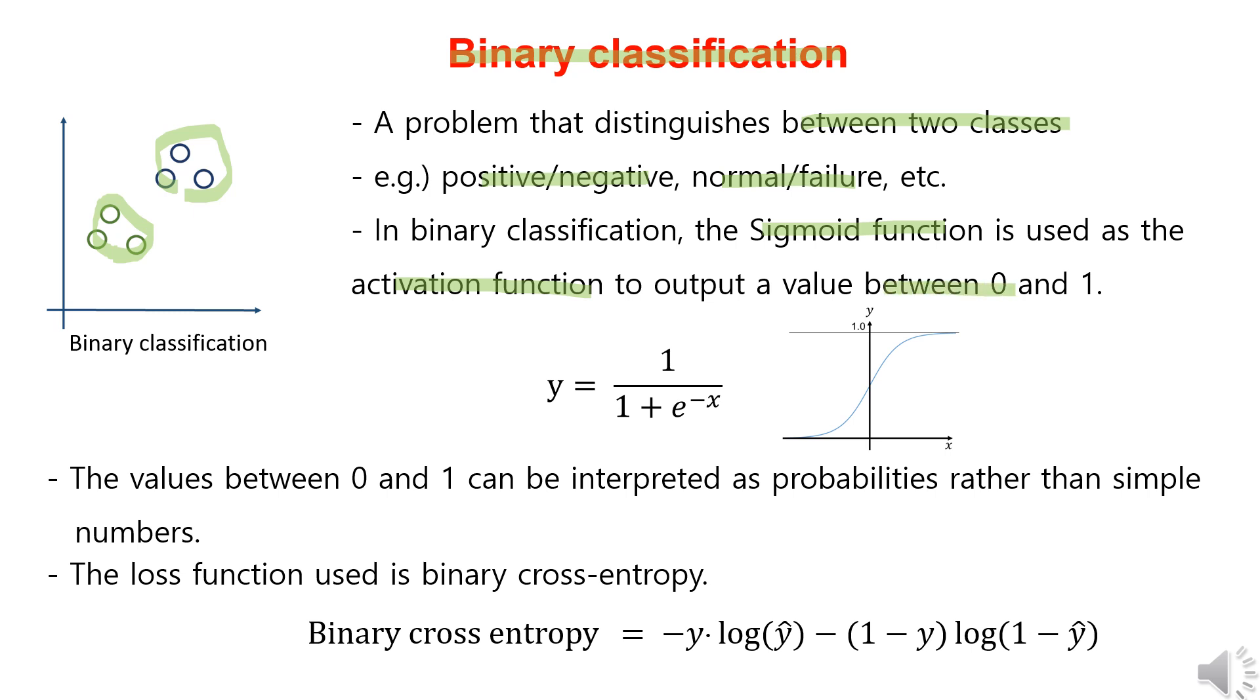In binary classification, we use the sigmoid function as the activation function, producing values between zero and one. This equation shows the sigmoid function where when x is small, it approaches zero, and as x increases, it converges to one.